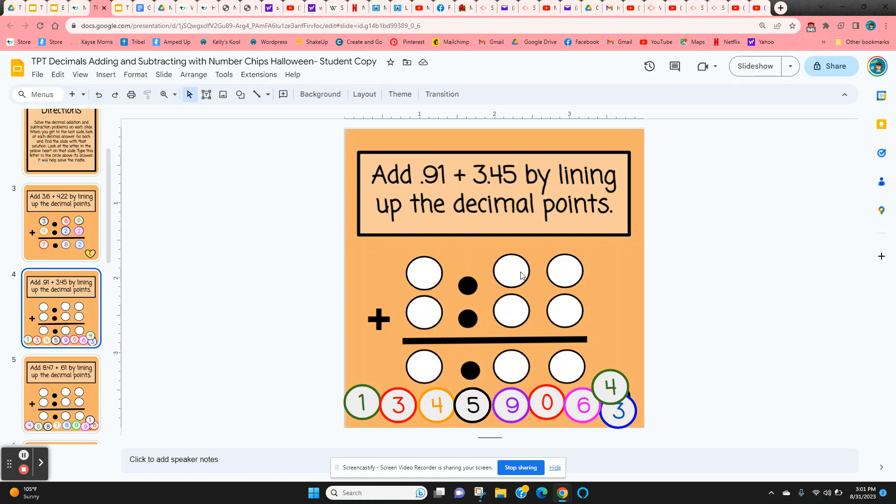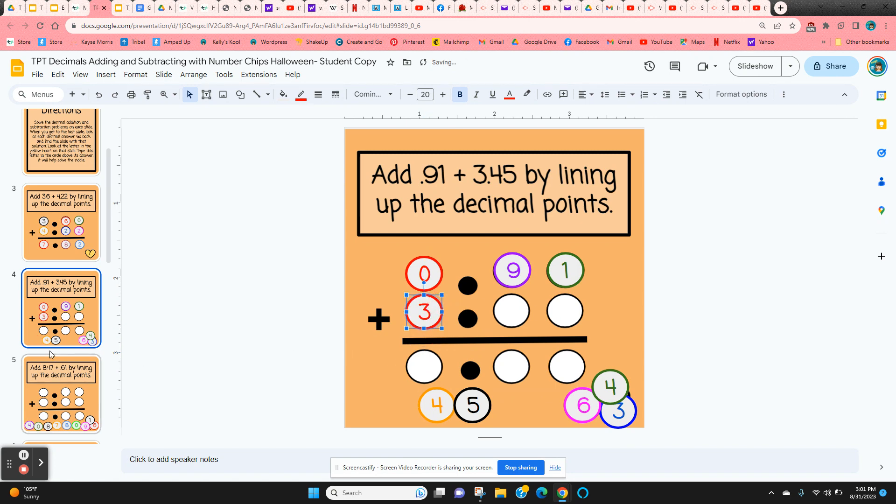The next slide they have 91 hundredths. They need to know that the nine goes here to the right of the decimal point. And again they have that blank space which means they have to fill it in with a zero.